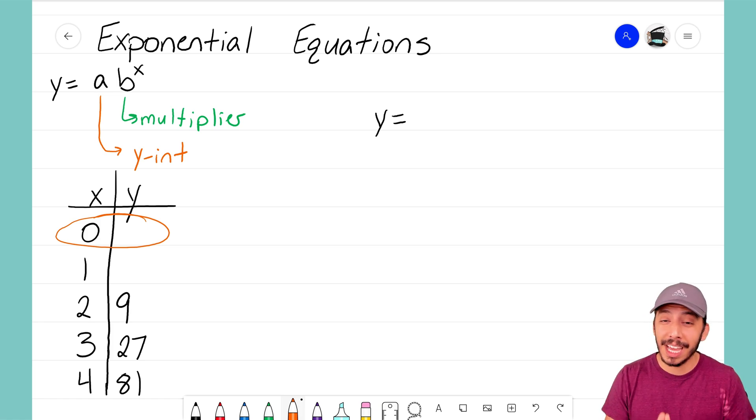The multiplier is the one that we want to focus on and I think it's the one that we'll be able to find. Remember with a multiplier, that is the number that we are using to multiply each output to get the new output below it. So there is some number that I'm multiplying 9 by to get 27, and then I'm using 27 and that same number to multiply and get 81.